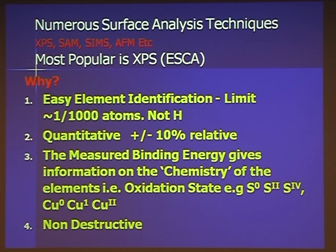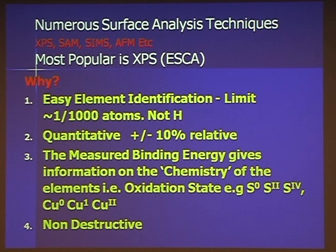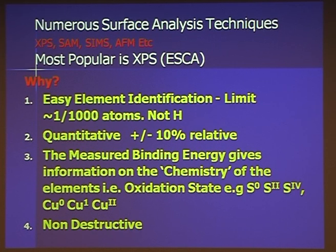Why is XPS so important? Very easy elemental identification, down to about one in a thousand — no questions asked. Reasonably quantitative. And something not too many other techniques are capable of in a short time: you measure the binding energy of these electrons, and it gives you the chemistry of the elements — what the oxidation state is. For example, whether it's sulfur, sulfur 2, sulfur 4, or copper 0, copper 1, copper 2. This requires a bit of processing with XPS software. And in general it's non-destructive, though some fluorinated polymers are a little damaged during XPS analysis.